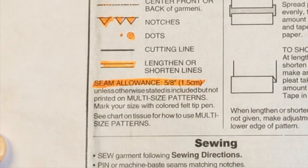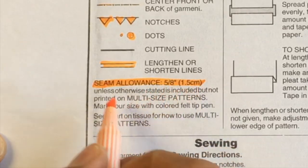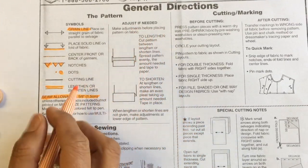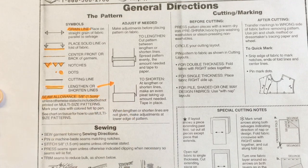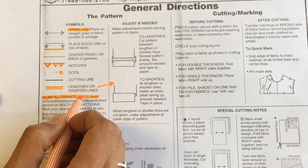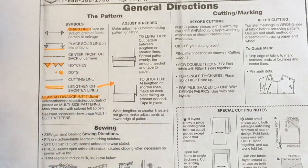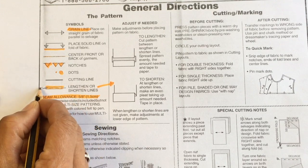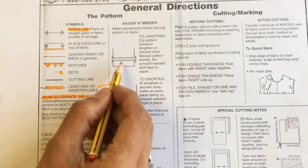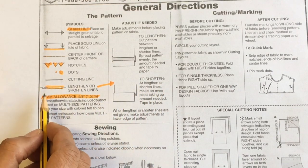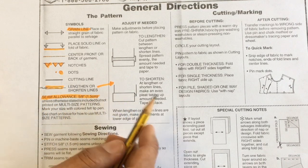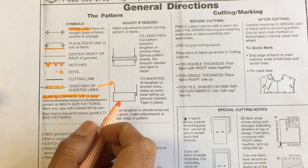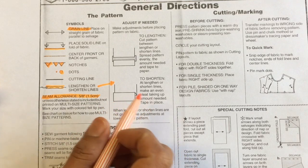The cutting line is a solid line and then you'll see in the middle of a pattern where you can shorten or lengthen. So our seam allowance throughout the whole pattern is going to be 5/8 unless it's otherwise stated. Now adjust if needed, so this is relevant to that bit here. So if you want to adjust by lengthening or shortening, what you do is you cut between those lines there, and then either attach a sheet there or you fold at that point and make it shorter. Now we're not going to make adjustments to this pattern so it's not relevant to us.